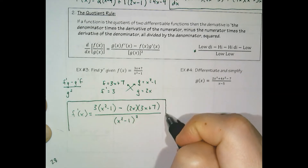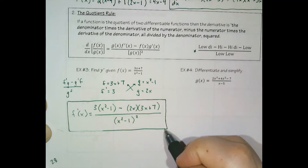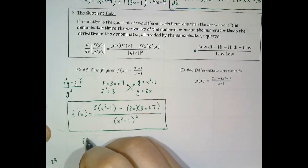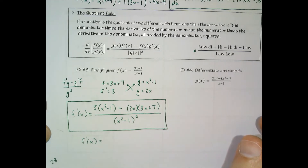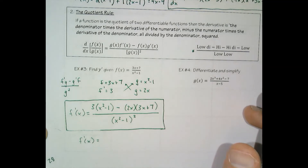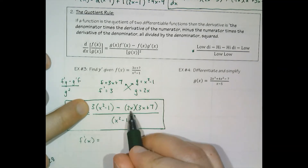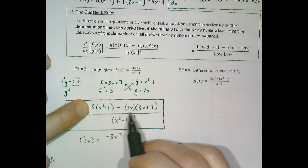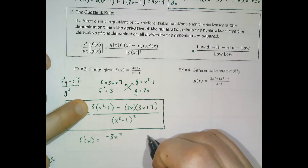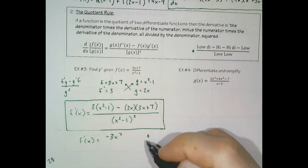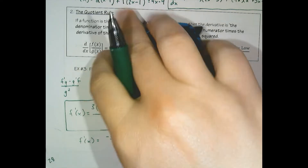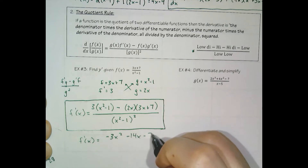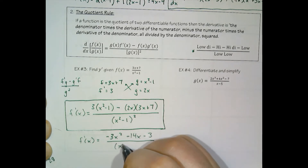When we get into calculus class, I'll start going through the process of trying to hold you accountable to simplifying these expressions. But for now, in these last few hours that we have left of the school year, it's not entirely important. This is 3x squared subtract 6x squared, subtract 3, and subtract 14x. I'm pretty sure that's the numerator.